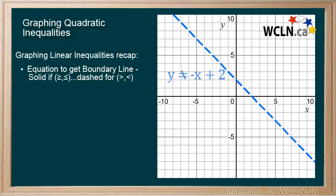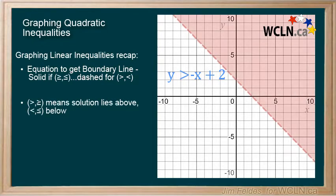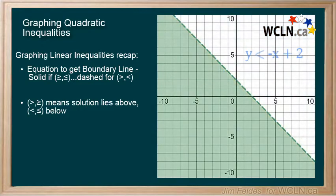Testing values on either side of the line would indicate where to shade. Or we recognize that greater than meant above the boundary line, while less than meant our solution lies below the line.